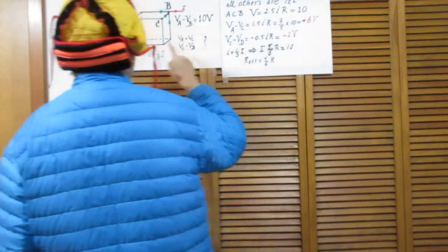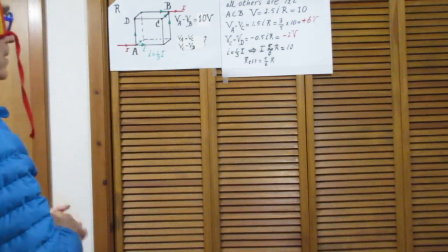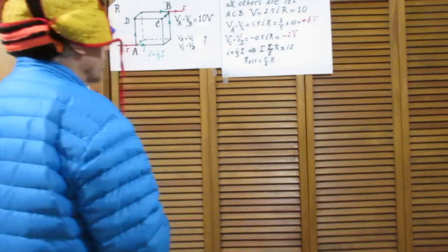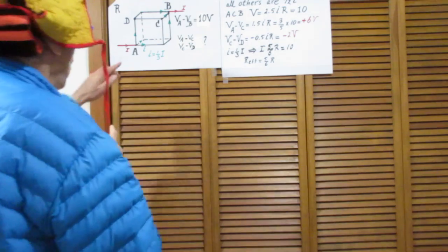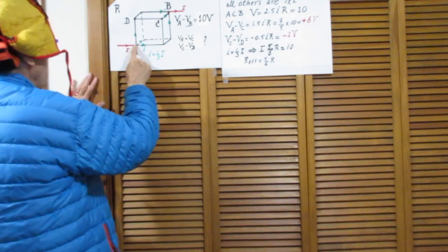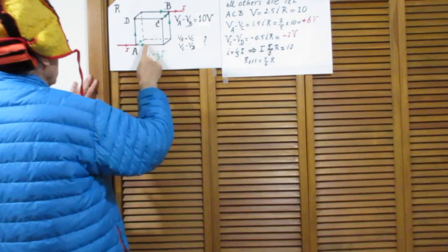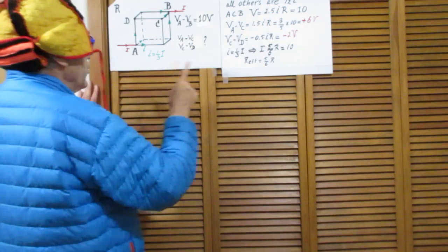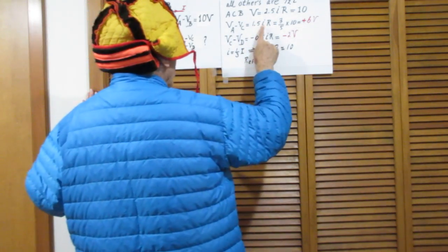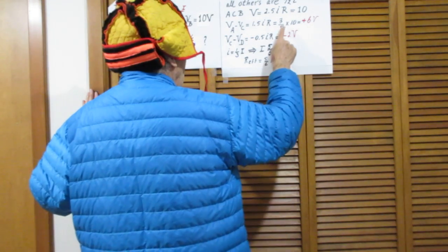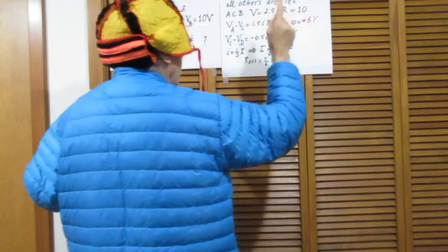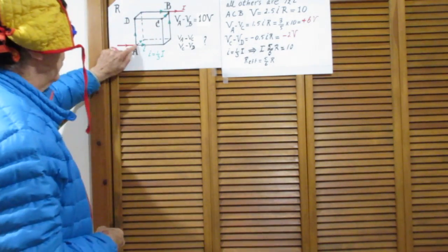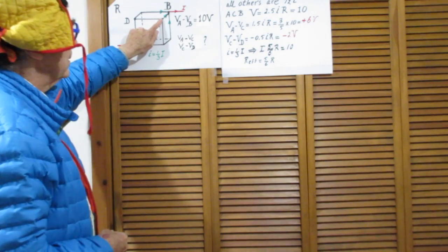So the potential difference from A to B is 10 volts, which equals 2.5 times little i times capital R. Now go from A to C: this is i, this is one half I. You can also go this way — this is i, this is one half I. So VA minus VC is 1.5·i·R. And that is three fifths times 10, so that is 6 volts. So A is 10 volts higher than B, but it is 6 volts higher than C.